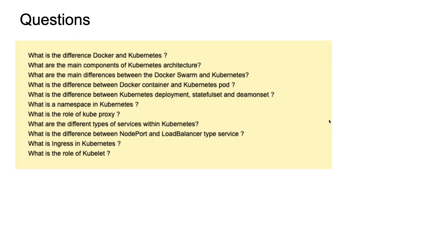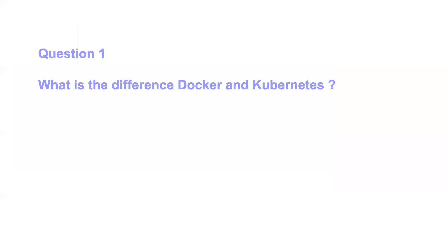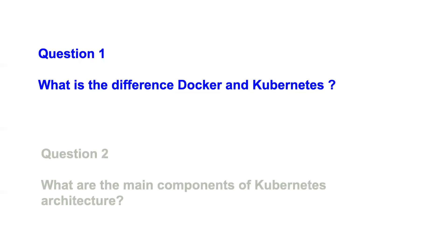Question number one: what is the difference between Docker and Kubernetes? Both are very popular technologies in DevOps. Basically, Docker is for building and running single containers, whereas Kubernetes is a system — you can consider it as a group of virtual machines combined together to form a cluster. So one is a container platform and the other is a container orchestration platform.